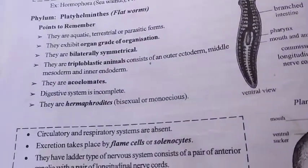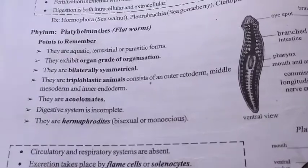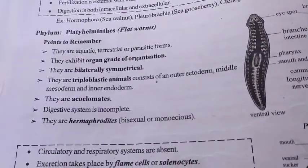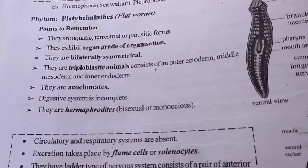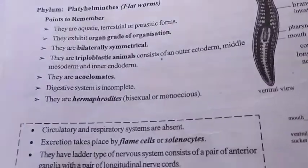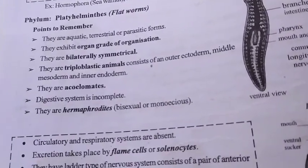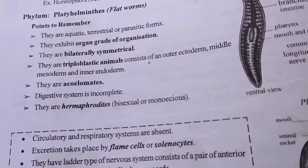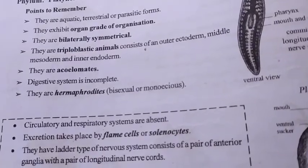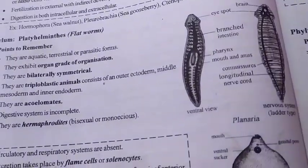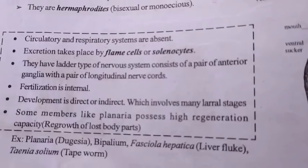The next phylum is Platyhelminthes — these are flatworms, meaning the organisms look like flat worms. They can be aquatic, terrestrial, or parasitic forms. They exhibit organ grade of organization, meaning they contain different well-developed organs. They are bilaterally symmetrical and triploblastic animals, consisting of an outer ectoderm, middle mesoderm, and inner endoderm. They are acoelomates. The digestive system is incomplete. They are hermaphrodites — meaning a single organism is bisexual. Examples include Planaria, liver fluke, and tapeworm.